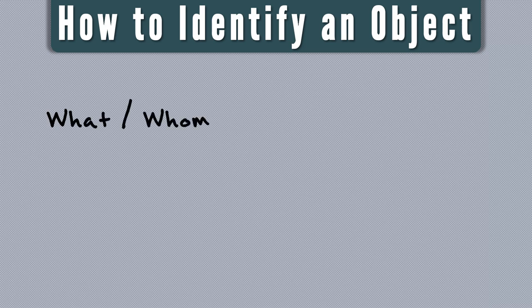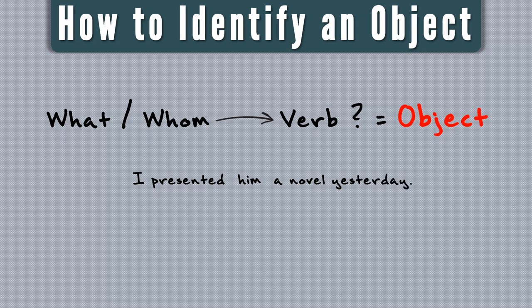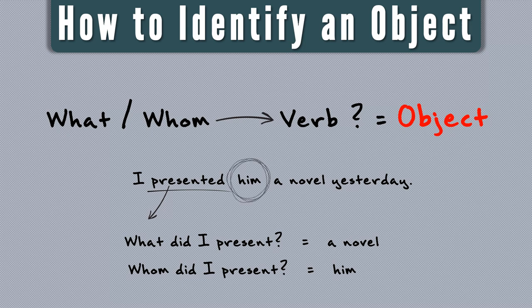To identify an object, we must first find the main verb of the sentence and ask it by using 'what' and 'whom' — the answers will be the objects. For example: 'I presented him a novel yesterday.' The main verb is 'presented.' Asking 'what did I present?' gives us 'a novel,' and asking 'whom did I present?' gives us 'him.' So both 'him' and 'a novel' are examples of objects.